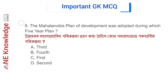Question number 9: The Mahalanobis Plan of development was adopted during which Five-Year Plan? Options: Third, Fourth, First, and Second. Correct answer: Option D — Second Five-Year Plan. The Mahalanobis Plan of development was adopted during the Second Five-Year Plan.